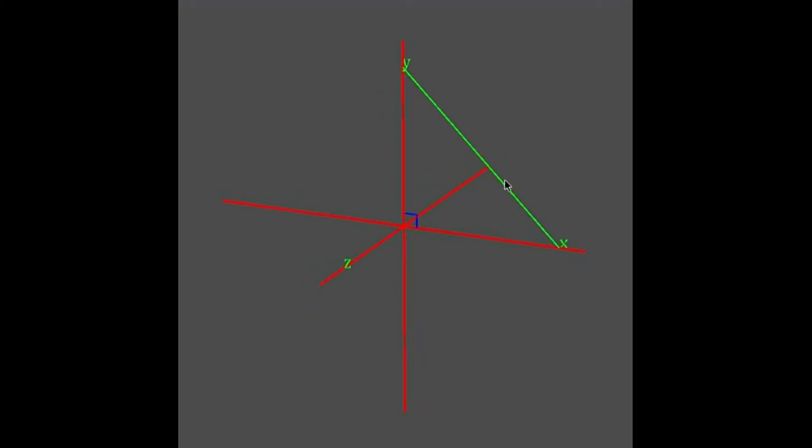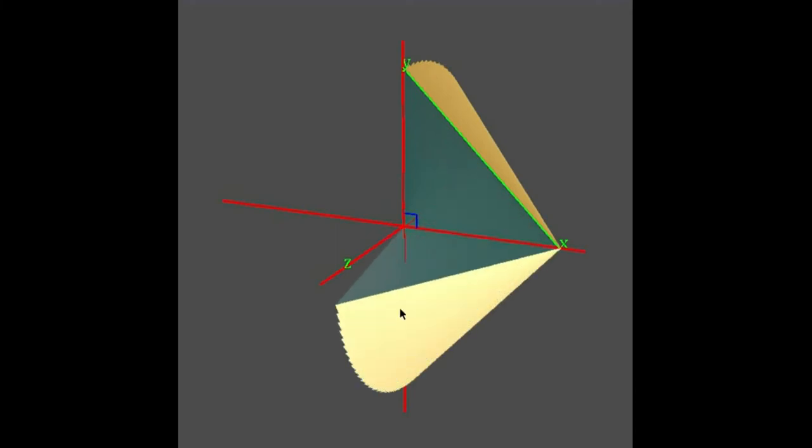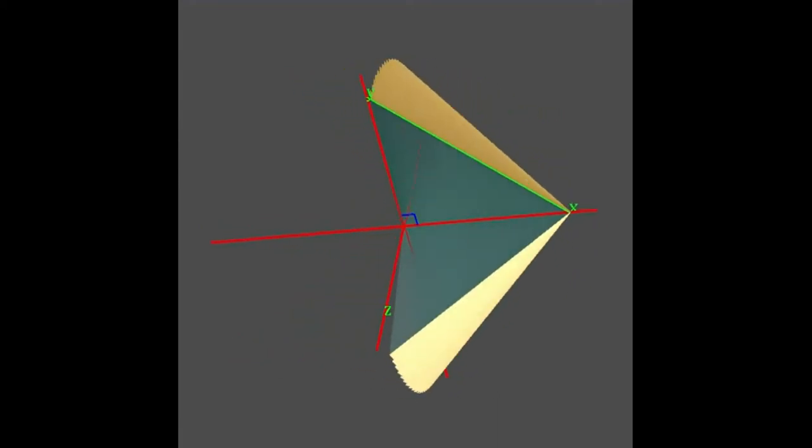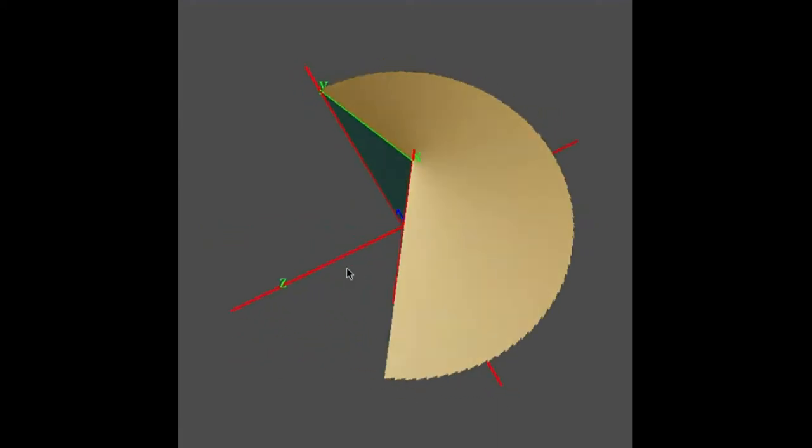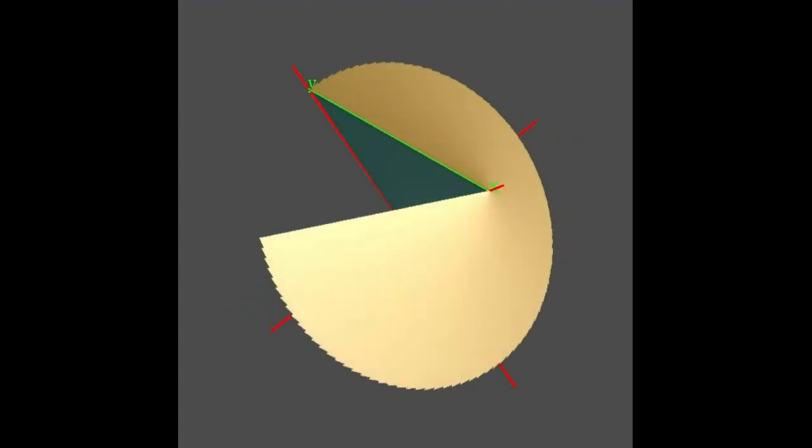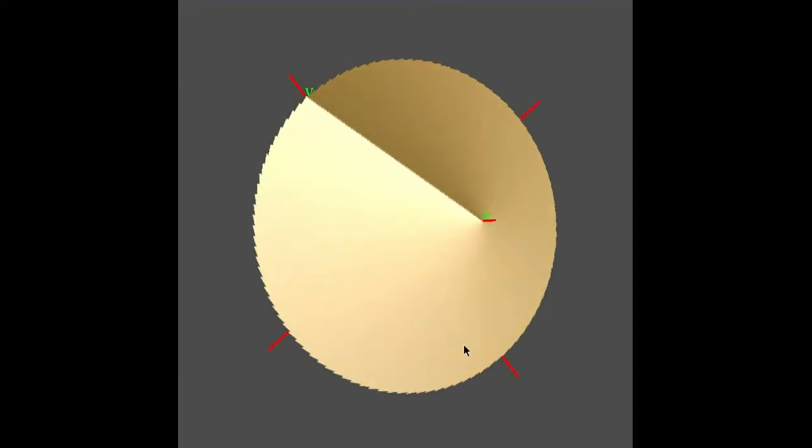We're going to get something whose cross-section is like a cylinder. If we take that and start revolving it around, something like this shape here, and once we take it all the way around, you get a cone.